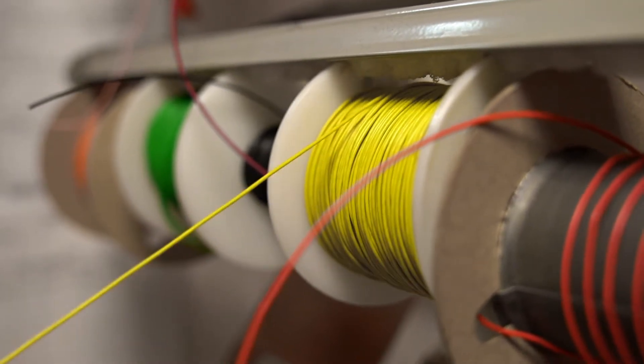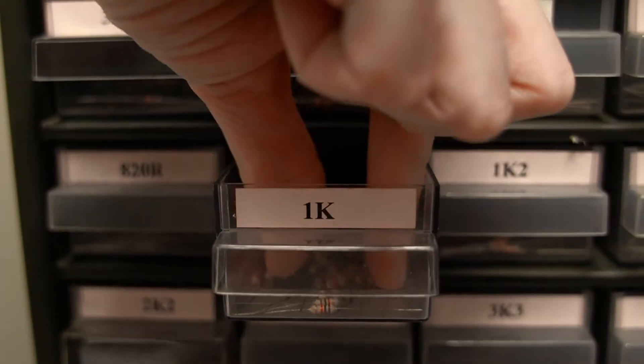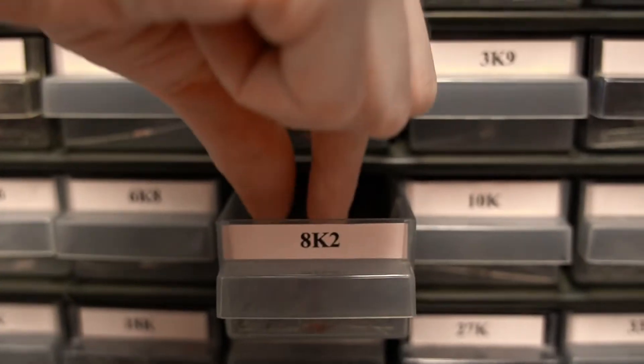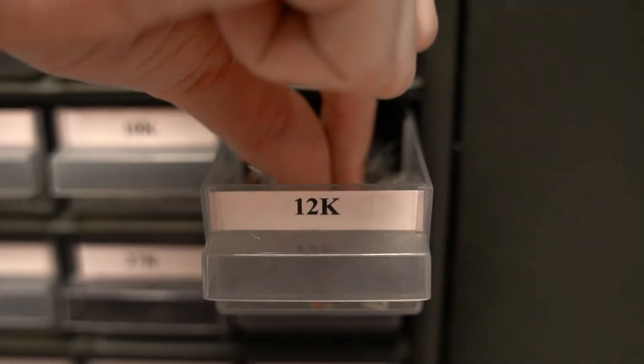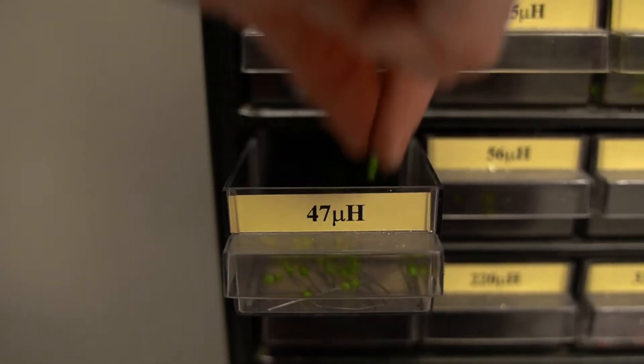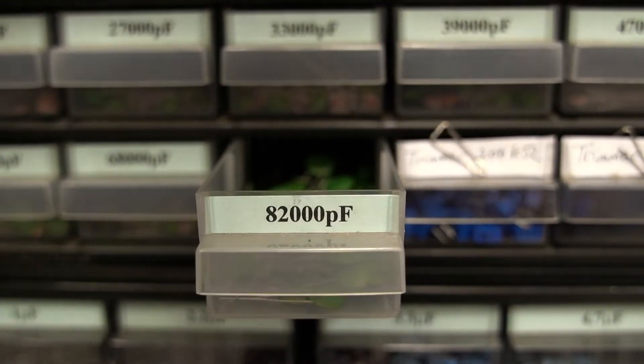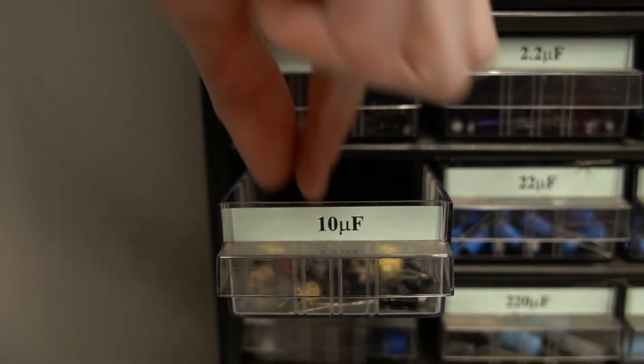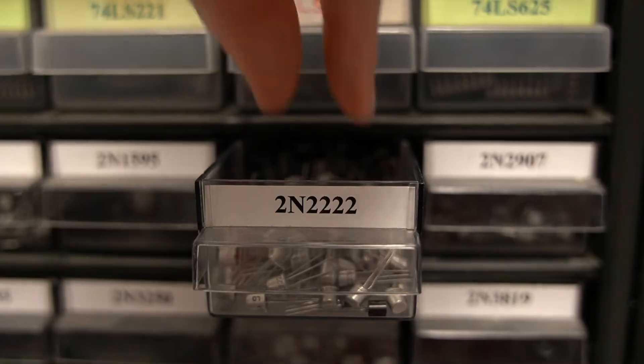I've pulled out all the components we're going to need to put together a Colpitts oscillator. Unlike the Wien Bridge oscillator from a previous video, the Colpitts oscillator today will operate at 1 megahertz, which is in the radio frequency band.